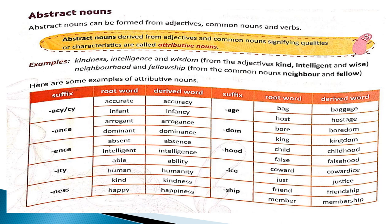First one: abstractive noun. Second one: verbal noun. Today we shall deal with attributive nouns. As you can see, abstract nouns are formed by adjectives, common nouns, and verbs. The nouns derived from adjectives and common nouns are called attributive nouns.